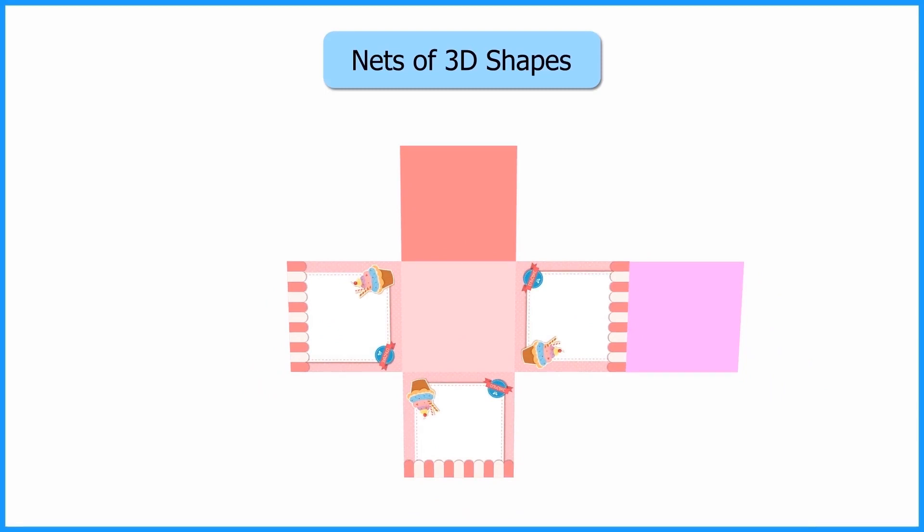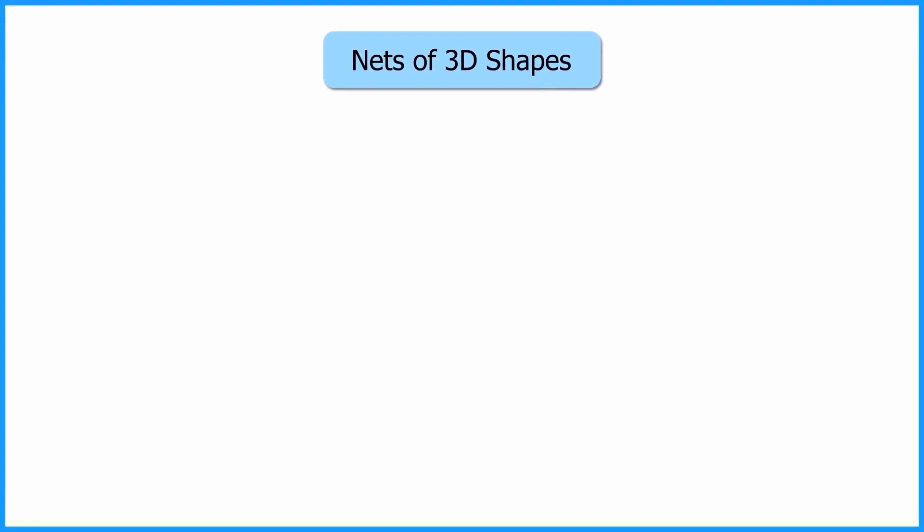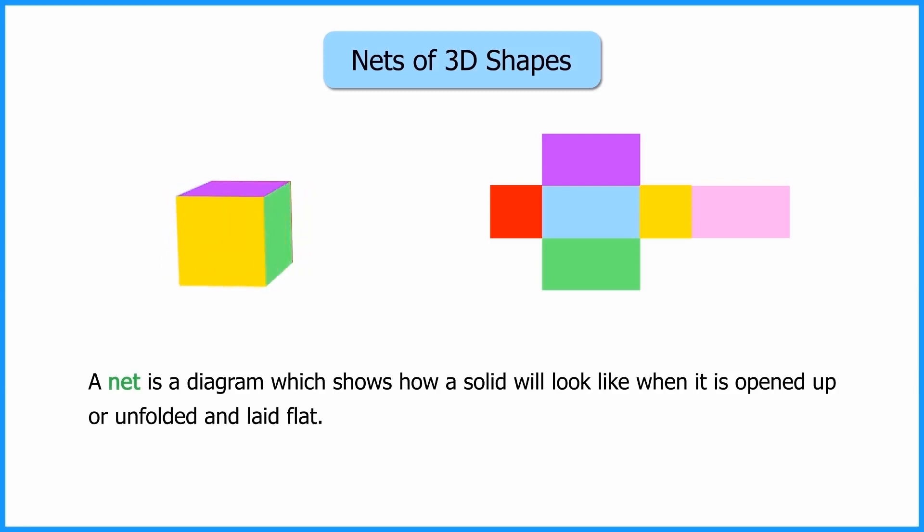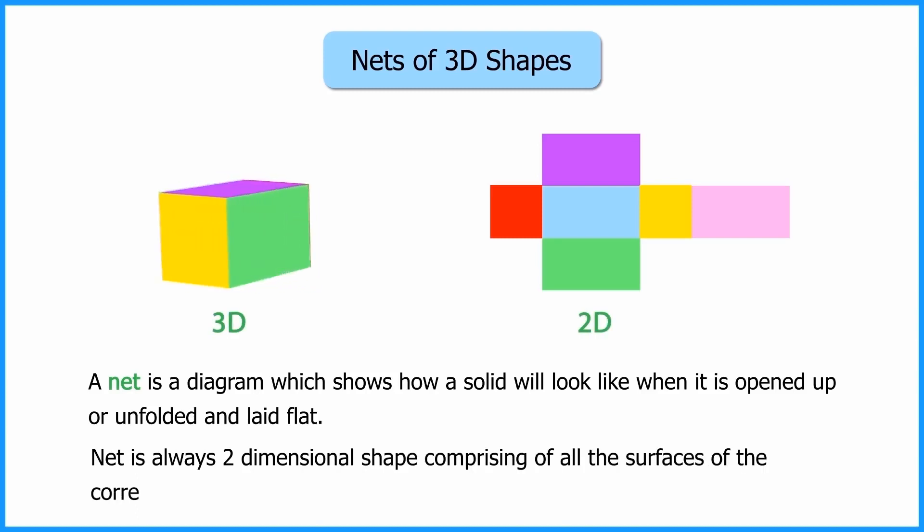These types of 2D shapes formed on unfolding a 3D shape is called its net. So we can say that a net is a diagram which shows how a solid will look like when it is opened up or unfolded and laid flat. Net is always a two-dimensional shape comprising of all the surfaces of the corresponding 3D shape.